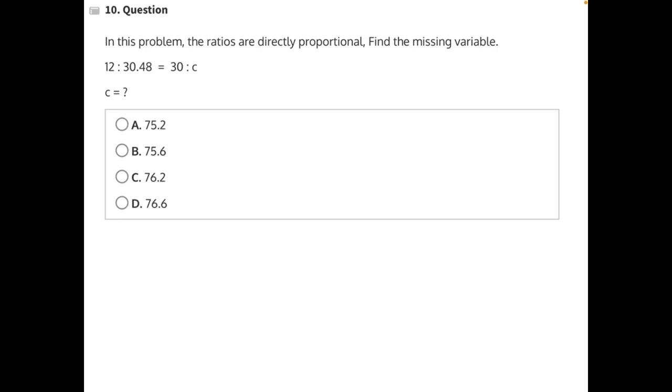In this problem, the ratios are directly proportional. Find the missing variable. Let's start by rewriting this in a way that's easier to see what we need to cross multiply. 12 over 30.48 equals 30 over c.